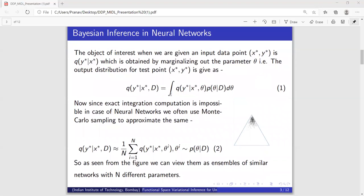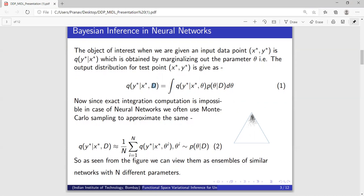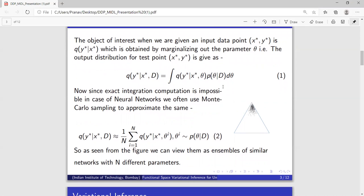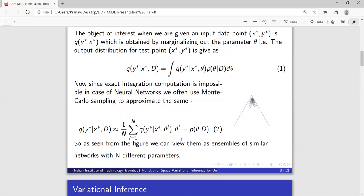So the main goal of Bayesian Inference is to compute the output distribution q(y*|x*), and it is done by marginalizing out the parameter distribution p(θ|D). Since exact integration is intractable, we have to rely on Monte Carlo sampling. Basically sample n different neural networks from our posterior and average them out, basically an ensemble of n different neural networks.